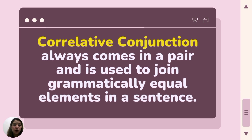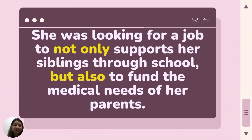Correlative conjunctions always come in pairs and are used to join grammatically equal elements in a sentence. Common pairs include either/or, neither/nor, not only/but also, and both. In most cases, no comma should be used between the two elements. For example: 'She was looking for a job not only to support her siblings through school, but also to fund the medical needs of her parents.' The sentence is joined by the correlative conjunction not only/but also.